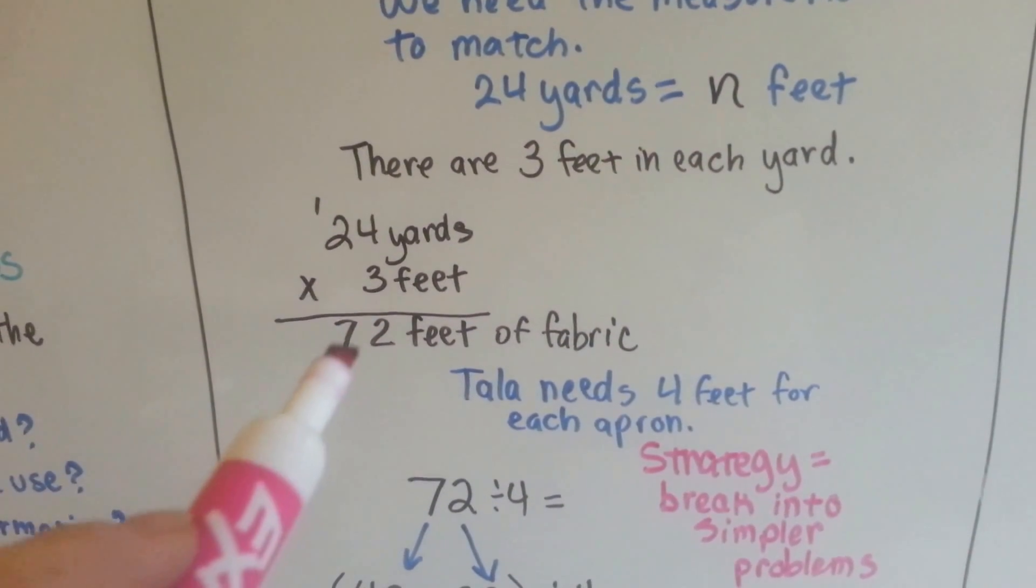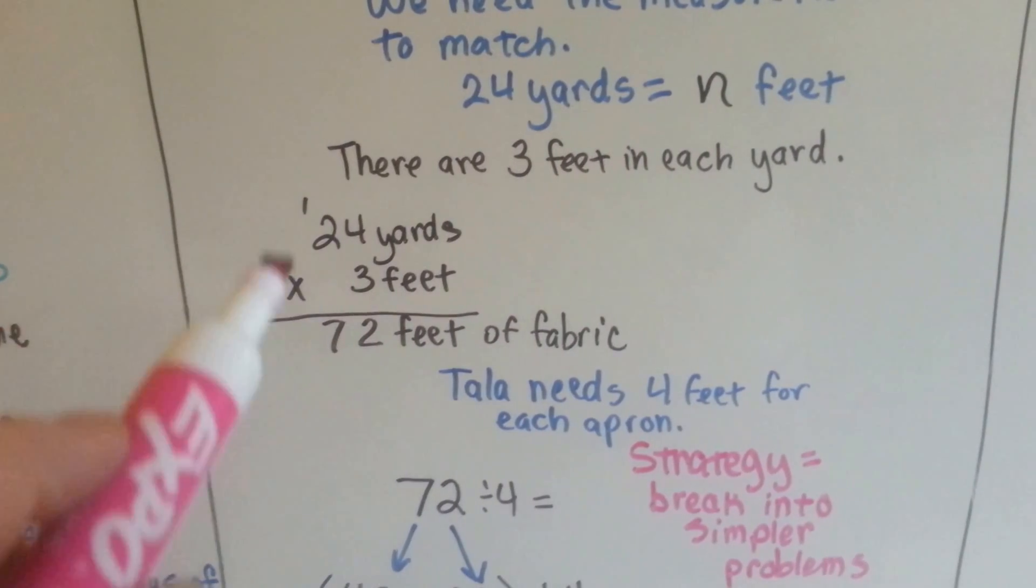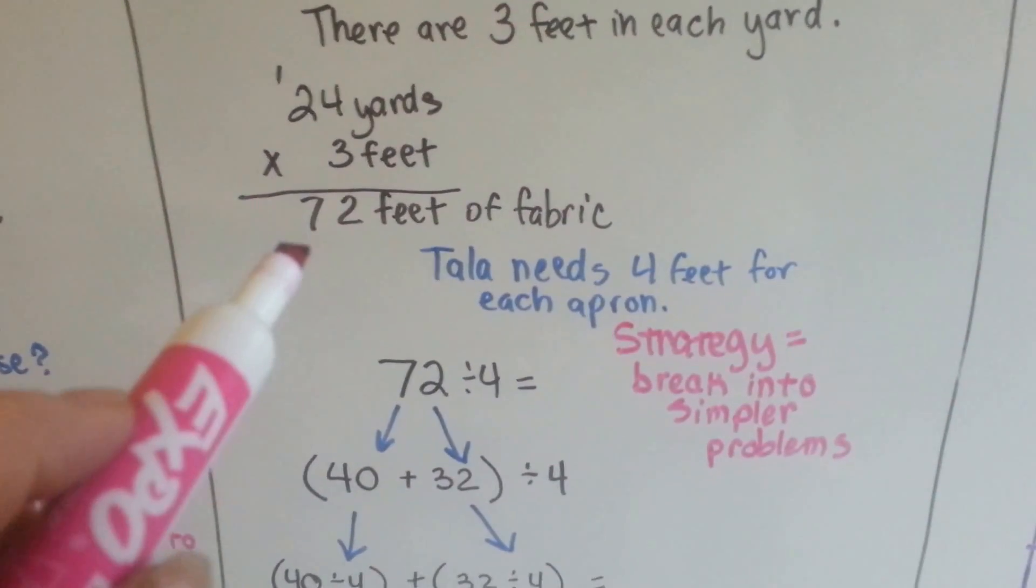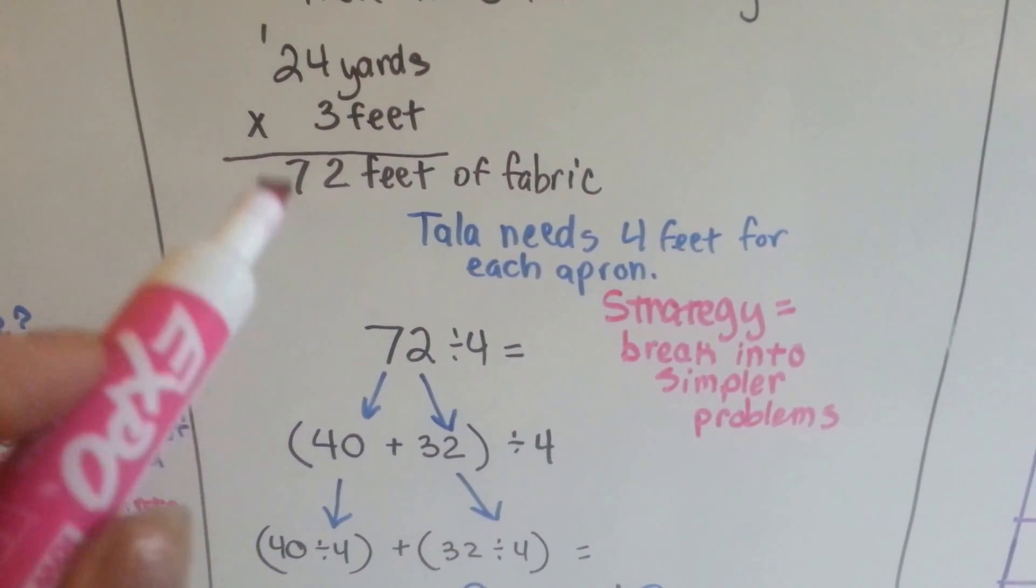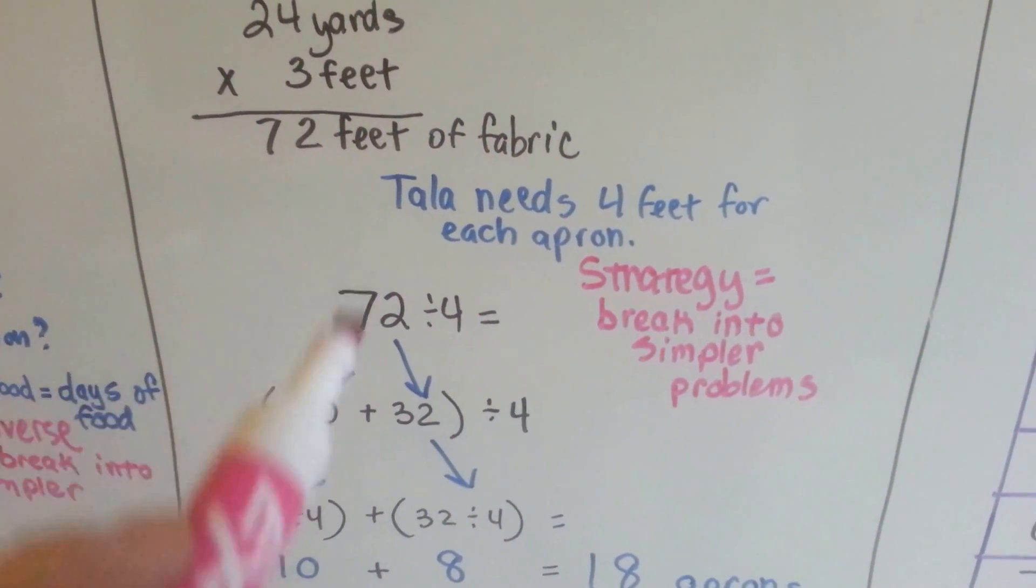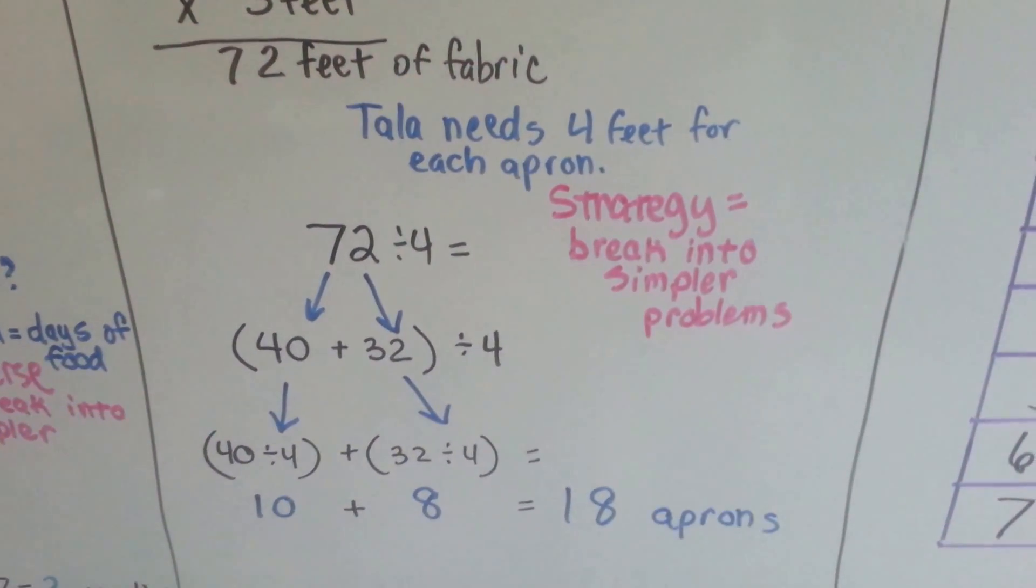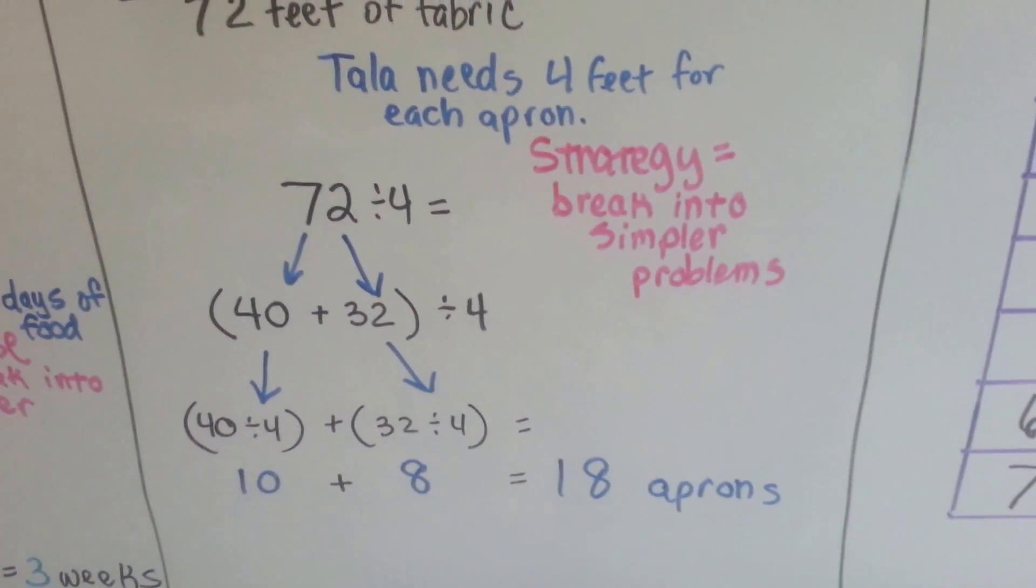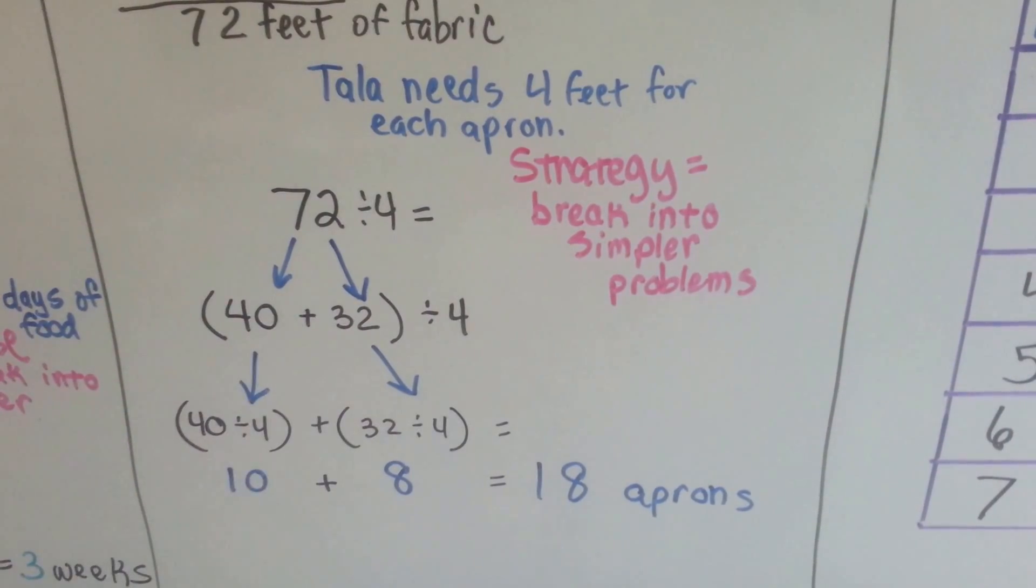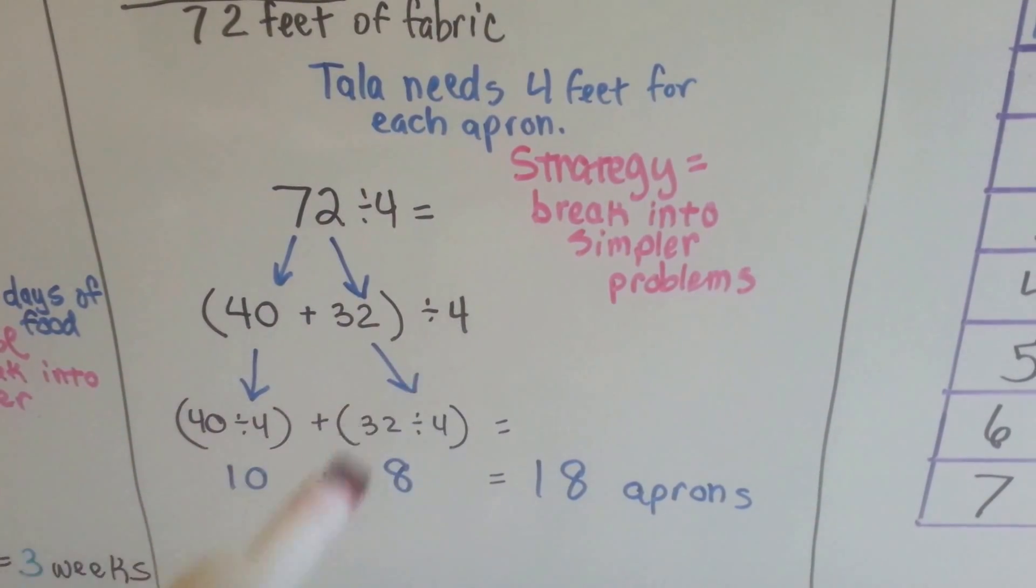That tells us 4 times 3 is 12. We carry the 1 and put the 2 down. 3 times 2 is 6, plus the 1 is 7. The 24 yards become 72 feet of fabric. Tala needs 4 feet for each apron. So the strategy is going to be break it into a simpler problem. 72 can be broken into 40 plus 32 and then we can divide them by 4.